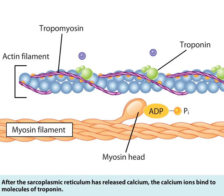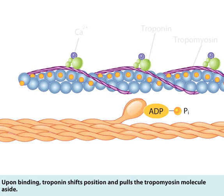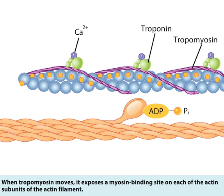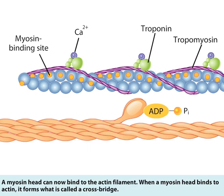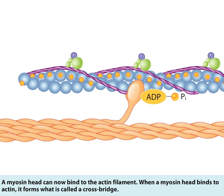After the sarcoplasmic reticulum has released calcium, the calcium ions bind to molecules of troponin. Upon binding, troponin shifts position and pulls the tropomyosin molecule aside. When tropomyosin moves, it exposes a myosin binding site on each of the actin subunits of the actin filament. A myosin head can now bind to the actin filament, forming what is called a crossbridge.